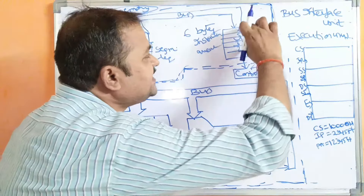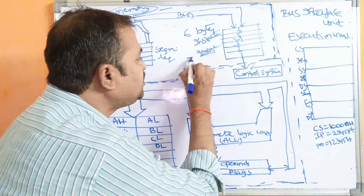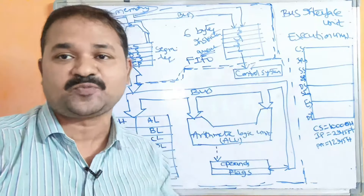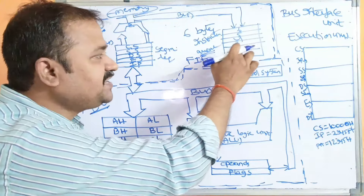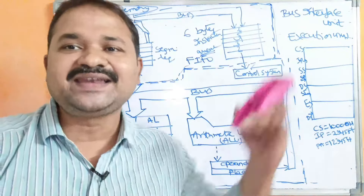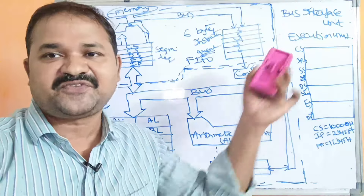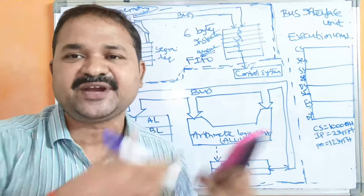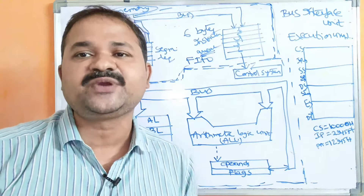The Instruction Queue can store a total of 6 bytes of instructions. The queue works on FIFO — First In, First Out — policy. The BIU fetches the first instruction and stores it, then fetches the second, and so on up to six instructions. While retrieving, the first instruction is retrieved and executed first, followed by the second, third, and so on.